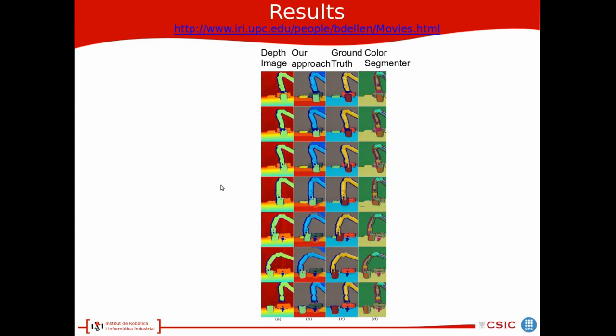Finally I will show you the results. In this example the first column shows the depth image. The second column shows the segmentation and tracking with our approach. Third column shows the ground truth and the fourth column we show the algorithm of a color based segmenter. We can see that compared to the color segmenter our results were less over segmented and also sometimes it was under segmented. For example this box the color segmenter was unable to segment.